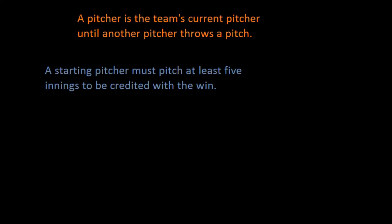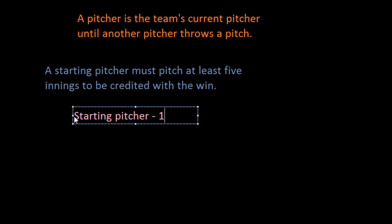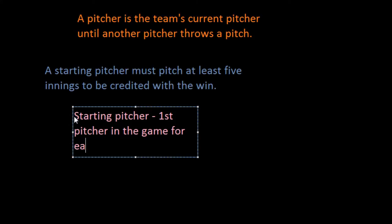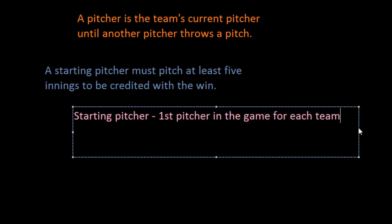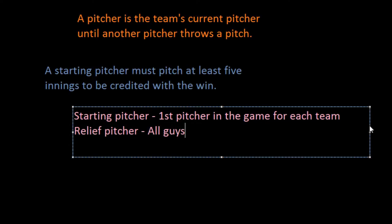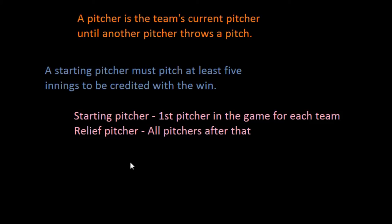The second stipulation is that the starting pitcher must pitch at least five innings to be credited with the win. The starting pitcher is the first pitcher for each team in the game. All pitchers after the starter are called relief pitchers. For relief pitchers, there is no minimum amount they are required to pitch to pick up the win. If the game is called after five innings due to rain, the starter is only required to have pitched four innings to earn the win.